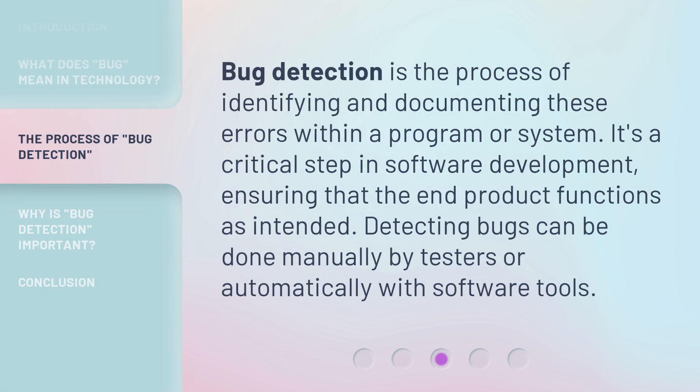Bug detection is the process of identifying and documenting these errors within a program or system. It's a critical step in software development, ensuring that the end product functions as intended. Detecting bugs can be done manually by testers or automatically with software tools.